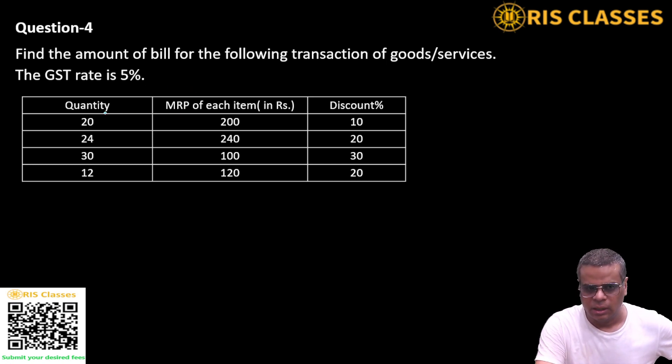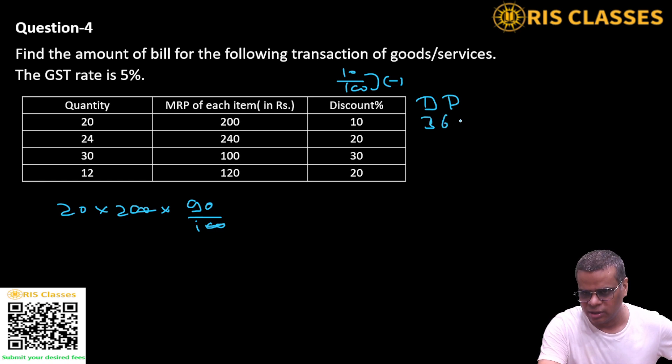Number of items 20, price of each item is 200, and discount is 10%. We will write the discount price. 20 items, 200 each, 10% discount is 10 by 100. 100 minus 10 is 90. Two zeros cancel, go into 9 is... 36. 1800 will be the total discounted price.